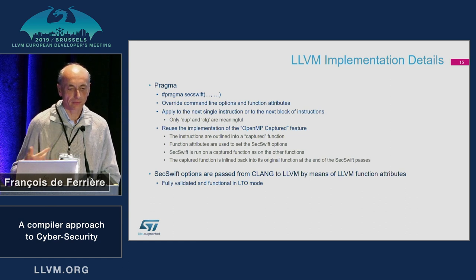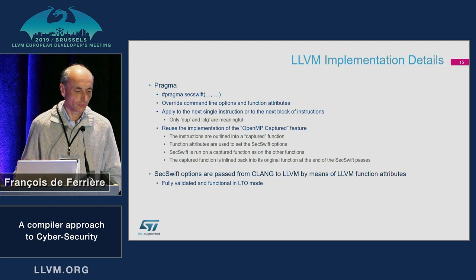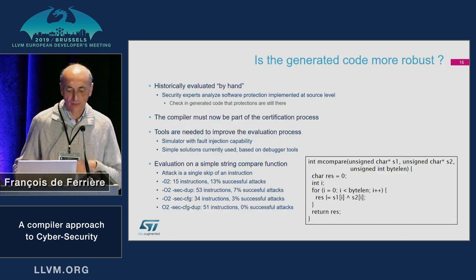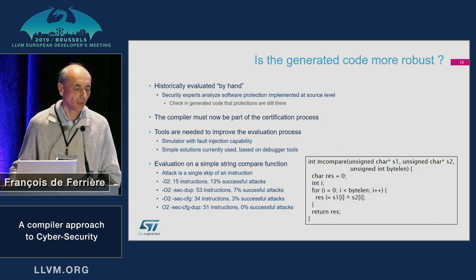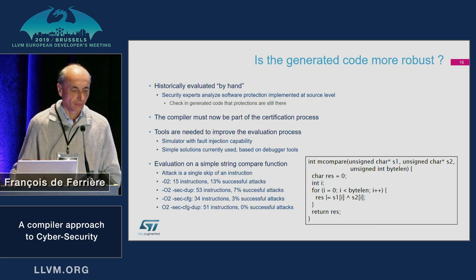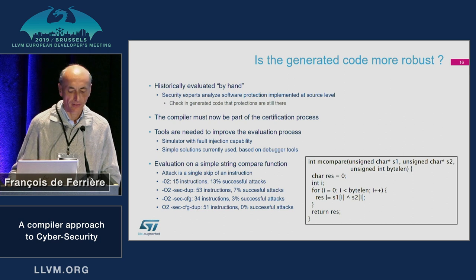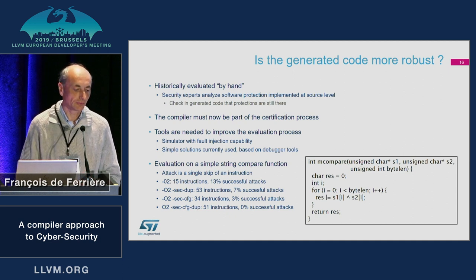We want to compile in LTO mode, and we have completely validated the code with the -flto option. How is the code more robust after this transformation? Historically, before the compiler could generate such code, security experts would analyze the code after generation and check that it contains the countermeasures implemented at the source level. Now that countermeasures are implemented in the compiler, the compiler must be part of the certification process.